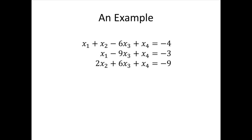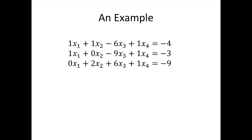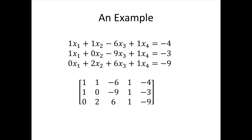Here's a typical linear system — three equations and four variables. Notice that not every variable appears in each equation. When you're first getting started with these, it can be helpful to rewrite the system so that any variable appearing by itself is written with a coefficient of one, and any missing variable is written in with a coefficient of zero. This allows us to easily create the corresponding augmented matrix for this linear system.